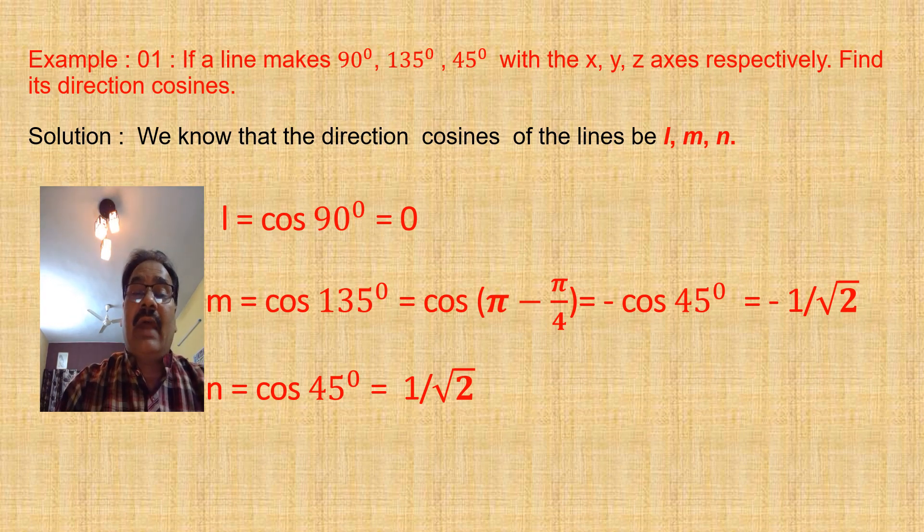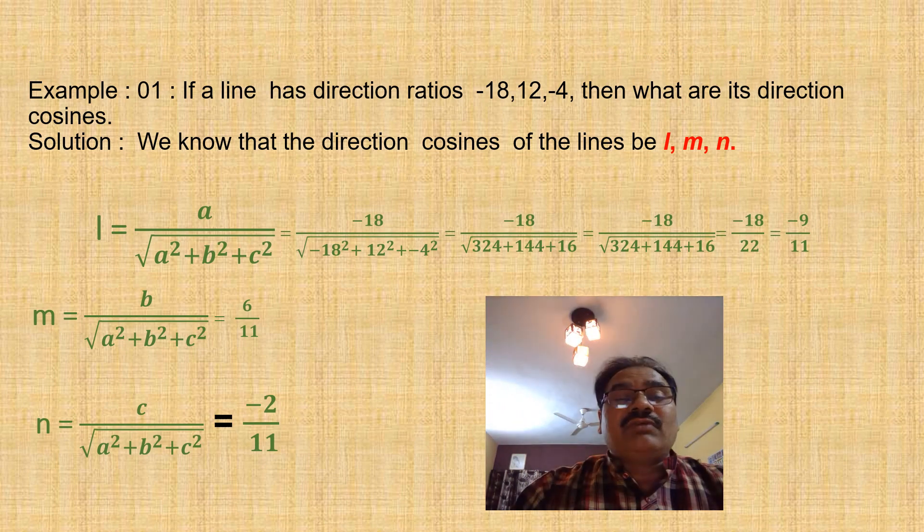We know that the direction cosines of the line are l, m, and n. l = cos 90° = 0. m = cos 135° = cos(π - π/4) = -cos 45° = -1/√2, and n = cos 45° = 1/√2. In this way you have calculated all the required values.